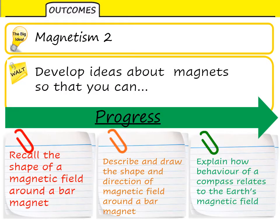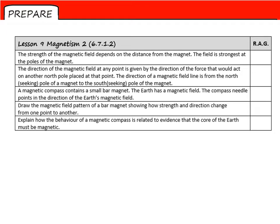In today's lesson we're going to take a look at the magnetic field around a bar magnet. Recalling the shape, the direction, discussing the strength. So we can describe and draw the shape and direction of said field. And then looking at how the behaviour of a plotting compass, magnetic compass, relates to the earth's own magnetic field. For reference here's the PLC section from Lesson 9.